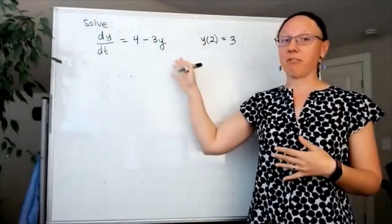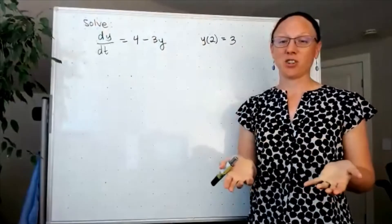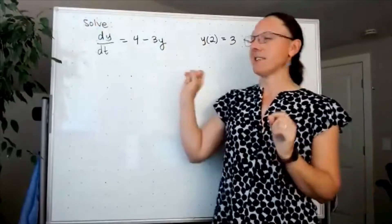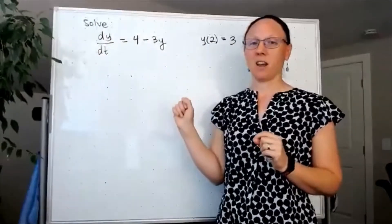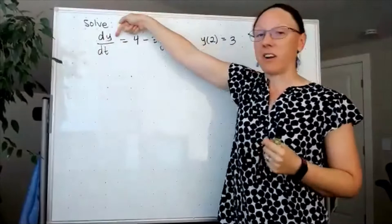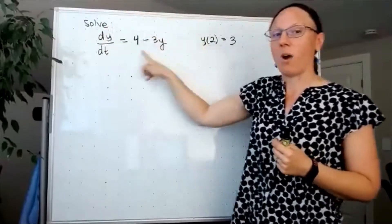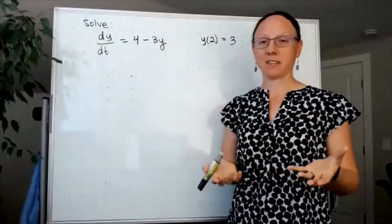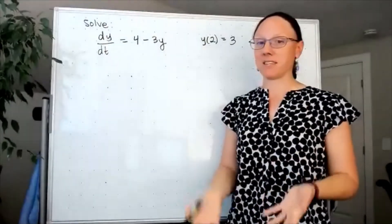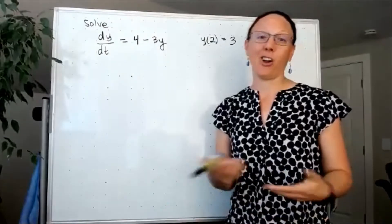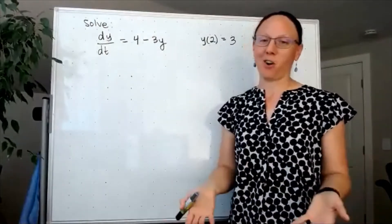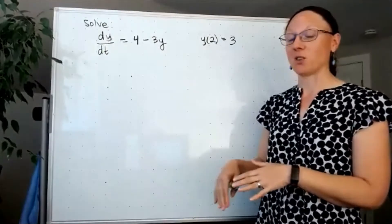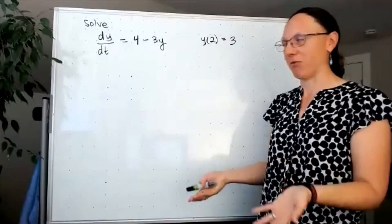First of all, if I'm going to solve this, it is good to do a quick check of what kind of differential equation it is. It's a differential equation because I have a derivative and an equal sign. y is the variable on top of my derivative, and y is the only variable that appears on the right-hand side, which makes this autonomous. Every autonomous differential equation is separable — they're not always easy to integrate, but they are always separable. So it is a separable differential equation.